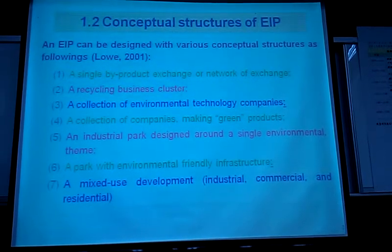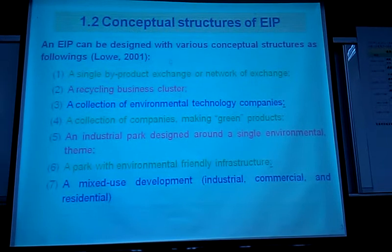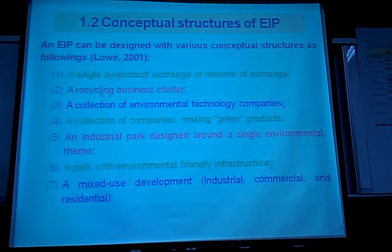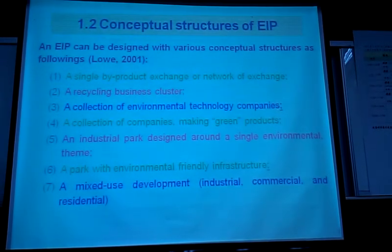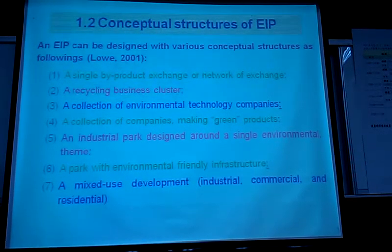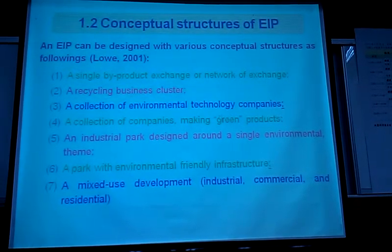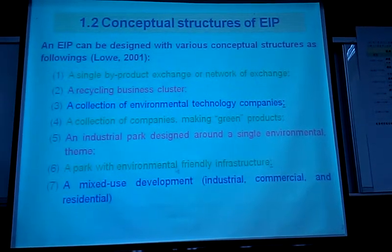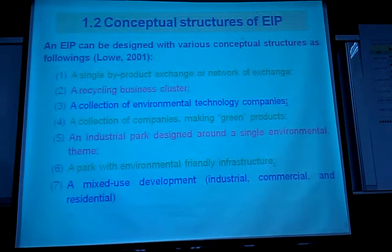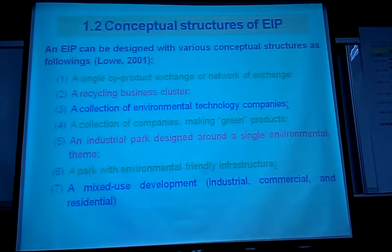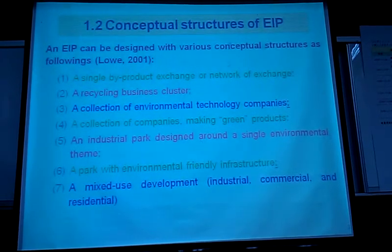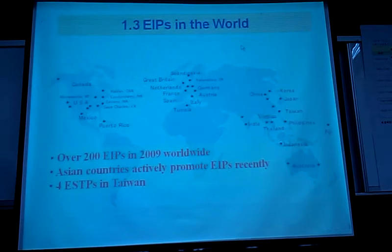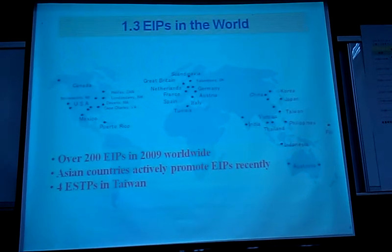Several major industries could occur in the eco-industrial park. For example, the recycling business in a cluster, environmental technology companies, and companies focused on green industry that produce green products. All industries in the eco-industrial park should be environmentally friendly, with software and infrastructure to meet EIP requirements. At the moment, we have probably over 200 industrial parks around the world.